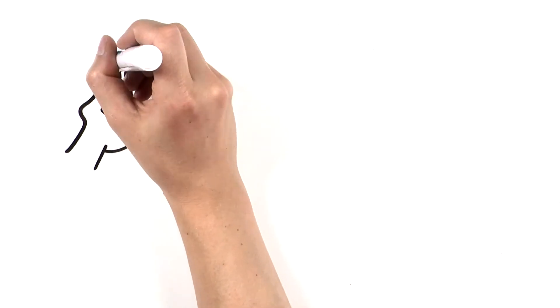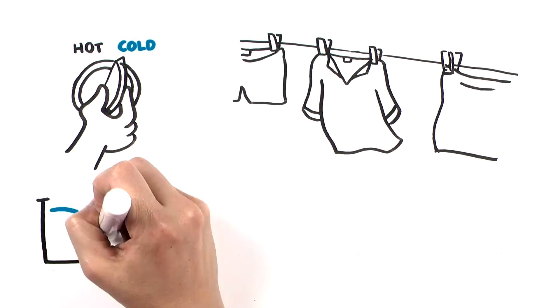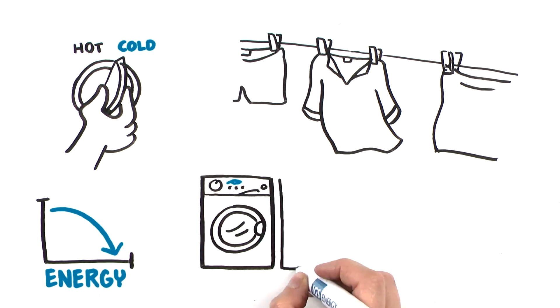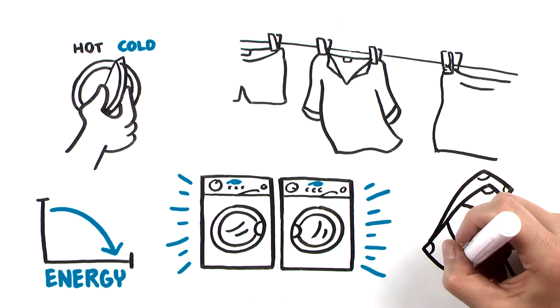By making changes such as washing in cold water, drying your clothes outside, or even upgrading to high efficiency models, you can reduce your energy use and maybe even save some money along the way.